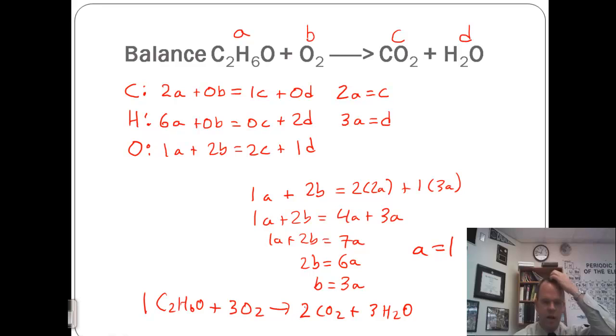And we can check 6 hydrogens on each side, 2 carbons on each side, and we have 4 plus 3 oxygens on the right side, so 7, 6 from the O2 plus 1 from the C2H6O. Let's look at one more example.